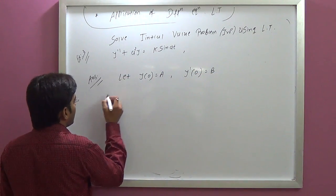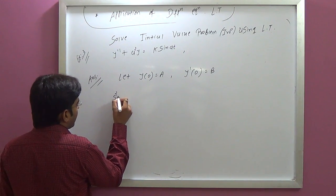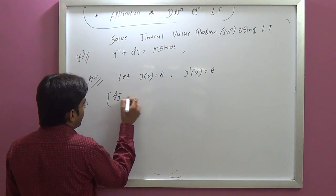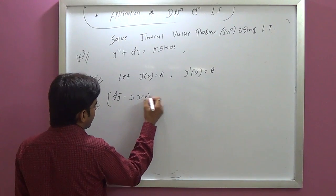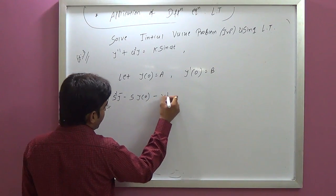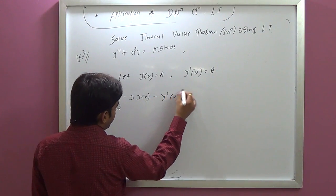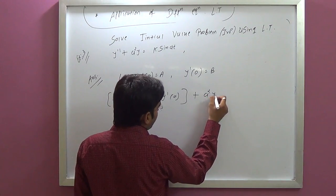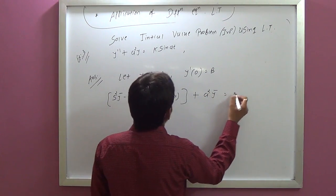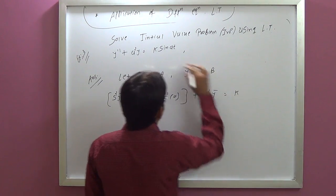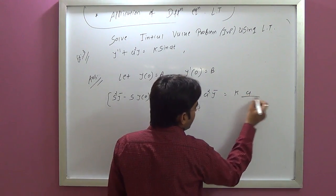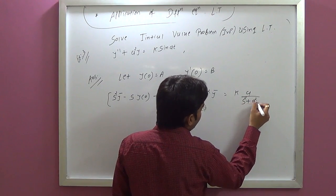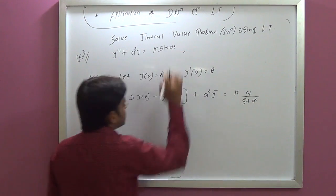Now, y double dash transforms as s-squared·Y-bar minus s·y(0) minus y'(0). So s-squared·Y-bar plus a-squared·Y-bar equals k·sin(at), which gives a constant on the right side with s-squared plus a-squared.